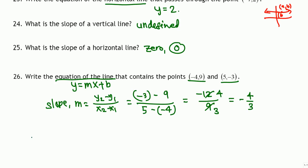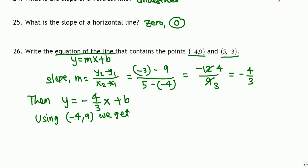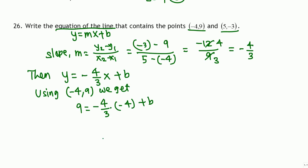We found the slope of our line. The equation is y equals mx plus b, so m is negative 4 thirds: y equals negative 4 thirds x plus b. We are almost done — now we need to determine b. We know the line passes through both points, so we can use either one. Using the point negative 4 comma 9: x is negative 4 and y is 9, so 9 equals negative 4 over 3 times negative 4 plus b.